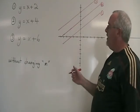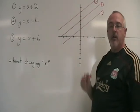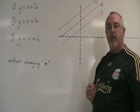And we can see that the effect of the b in y equals mx plus b is a vertical translation of the line up and down the y-axis.